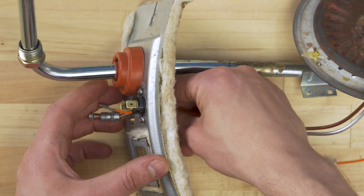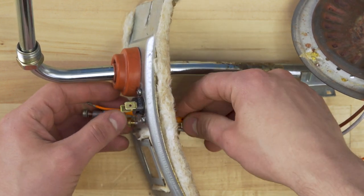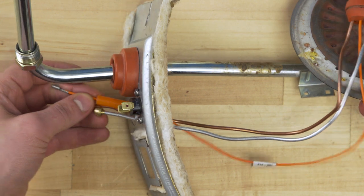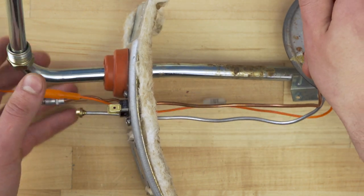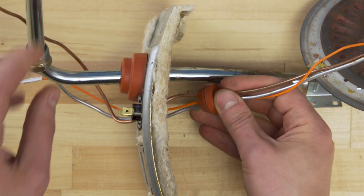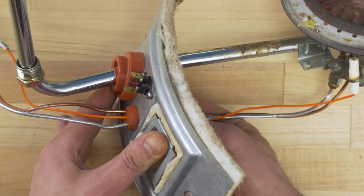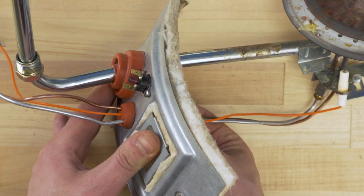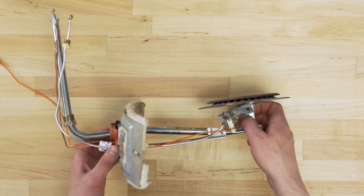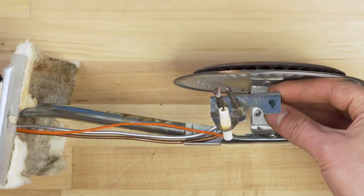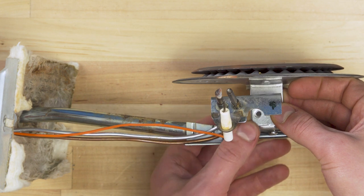Next snap the thermocouple wire into the door plug. Feed the pilot tube, igniter, and thermocouple wires through the manifold door. Next push the plug into place. Now align the pilot assembly and tighten the screw.